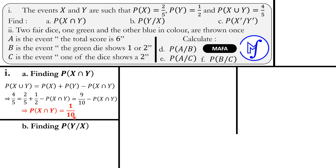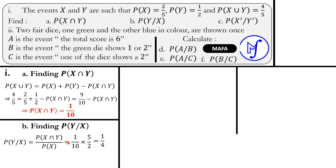Part B asks us to find the probability of Y given X. P(Y|X) is the ratio between the probability of their intersection and the probability of what is given. So P(Y|X) = P(Y∩X) / P(X). Replacing the respective values: P(Y|X) = (1/10) / (2/5) = 1/4.